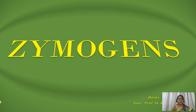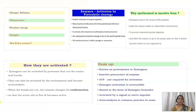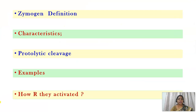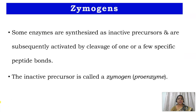Let's discuss zymogens. The learning objectives are: the definition of zymogens, their characteristics, proteolytic cleavage, examples, and how zymogens are activated. Zymogens are synthesized as inactive precursors and are subsequently activated by cleavage of one or few specific bonds.